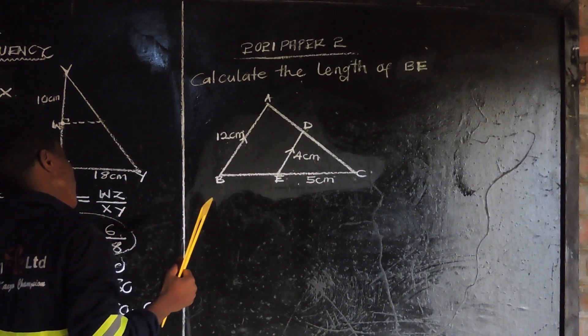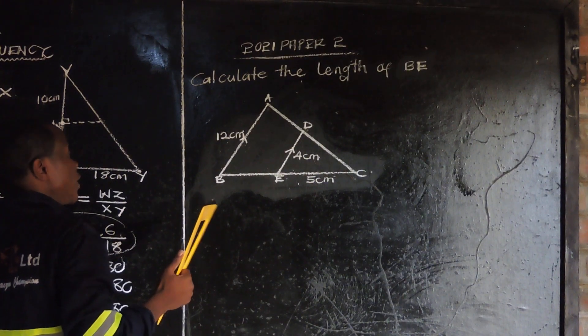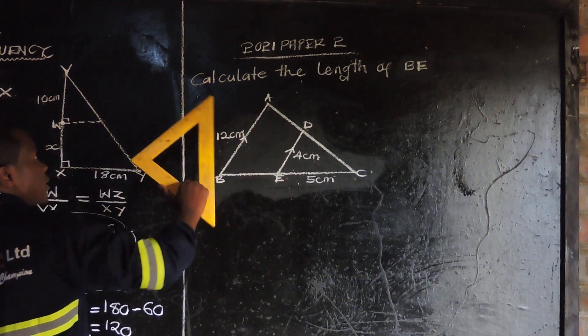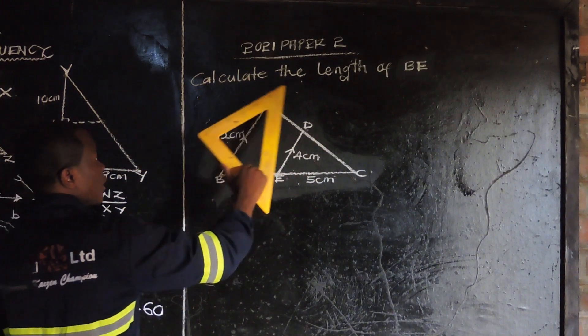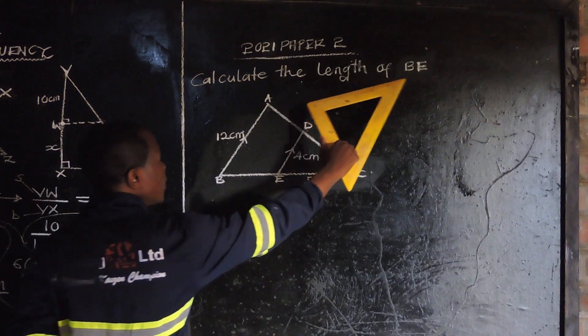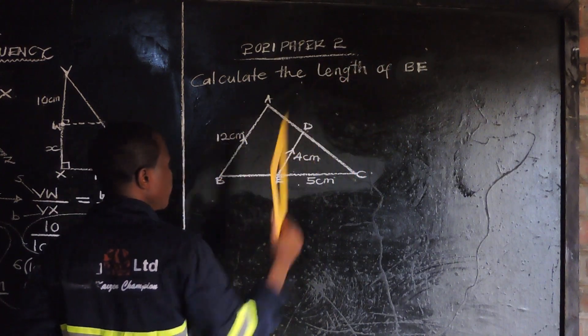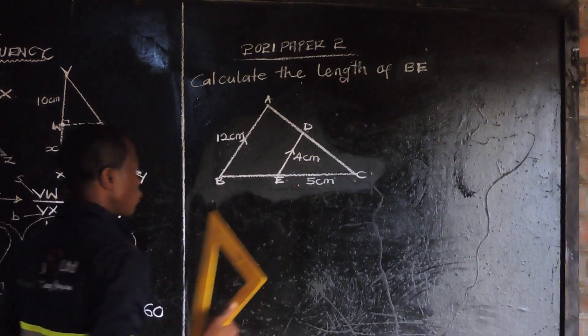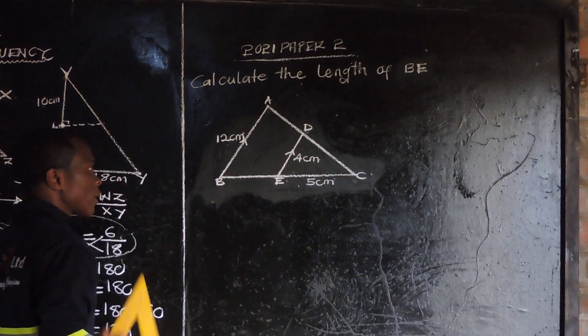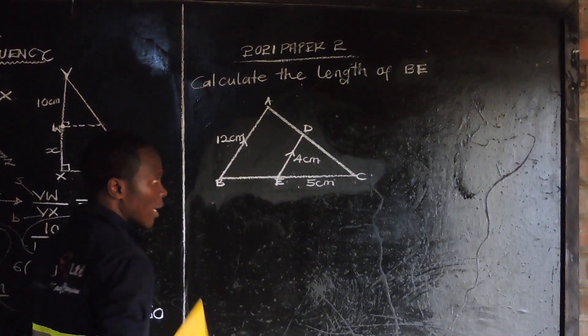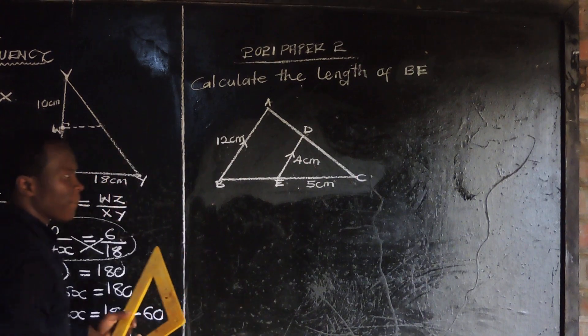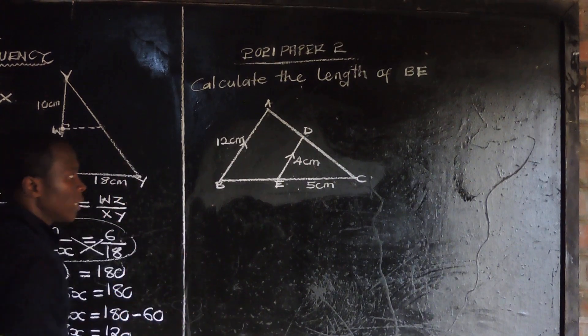Let's look at the 2021 past paper question. It's saying calculate the length of BE. So in this case, I've got two triangles which are similar.